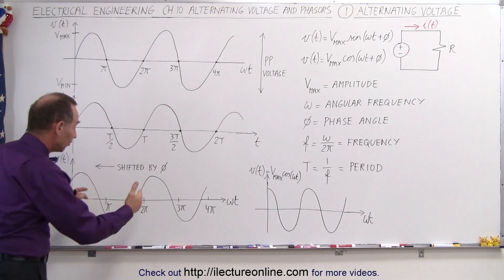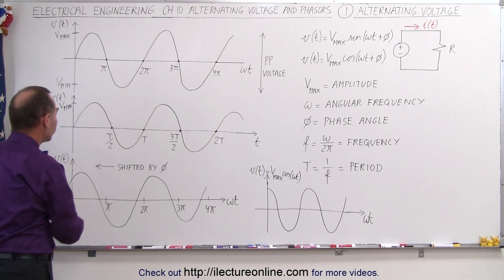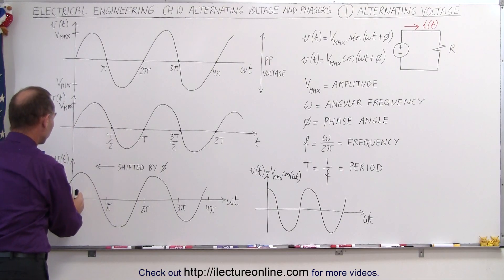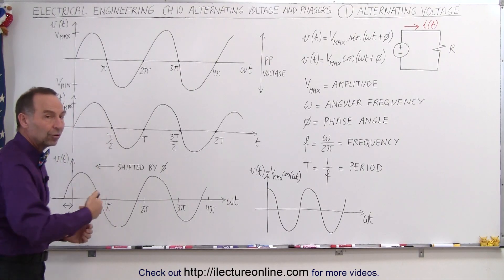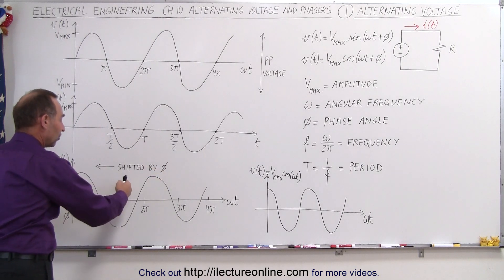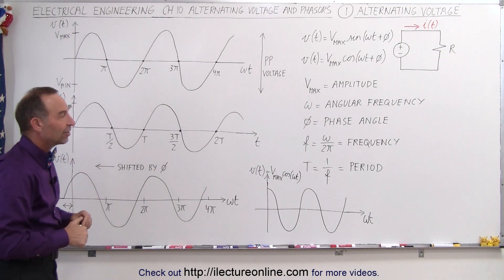It just means if it shifts to the left, you get to that value sooner. So notice here that instead of having to go from here to there in time, now you have to go a shorter period, so you get to the maximum voltage quicker when the graph is shifted to the left when you add a phase angle.